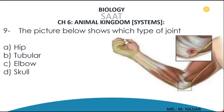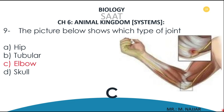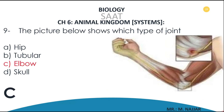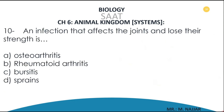Question number nine: the picture below shows which type of joint? A) hip, B) tubular, C) elbow, D) skull. The correct answer is C — the elbow joint.